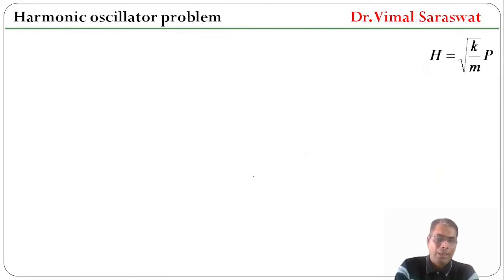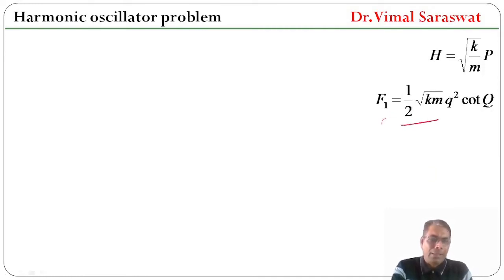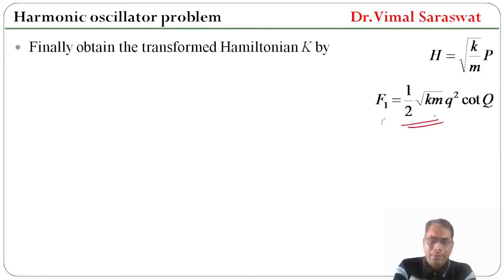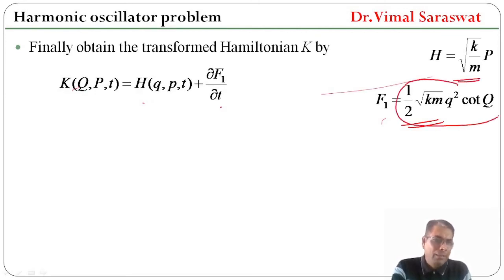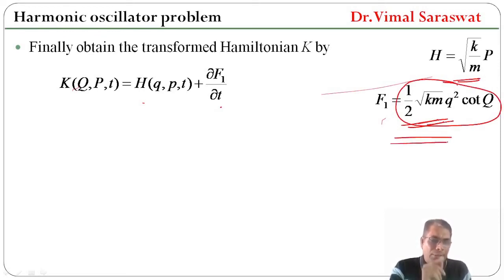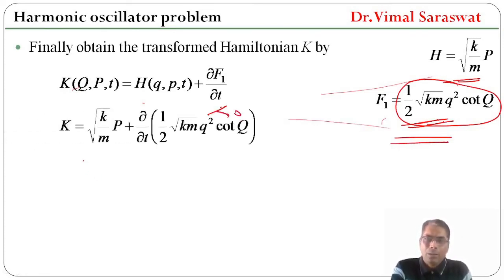Now, with the Hamiltonian expressed in terms of capital P, we obtain the transformed Hamiltonian using K = H + ∂F1/∂t. Since F1 does not depend on time, ∂F1/∂t = 0. Therefore, K = H = √(k/m) · P. This is our transformed Hamiltonian.